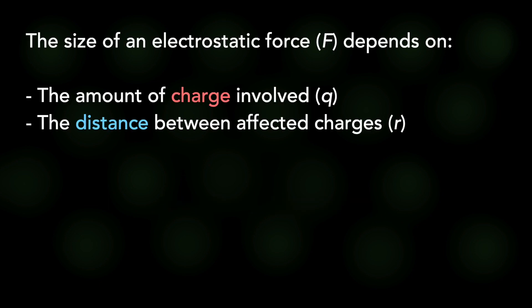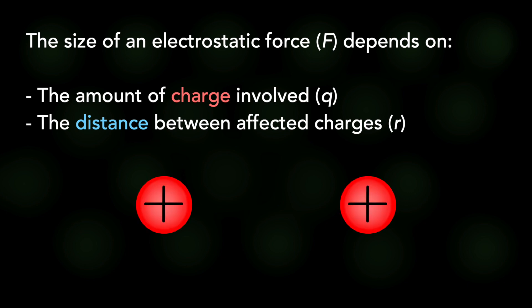Putting all this together gave Coulomb the new law of physics that was to be named after him. It relates the electrostatic force between two particles to the amount of charge on each particle and their separation distance. The size of the force depends on the product of the two charges divided by the square of the distance between them.